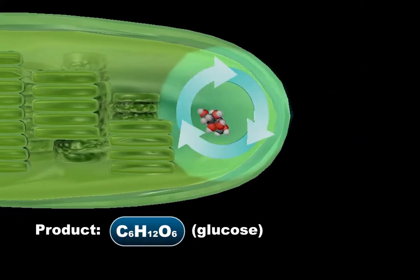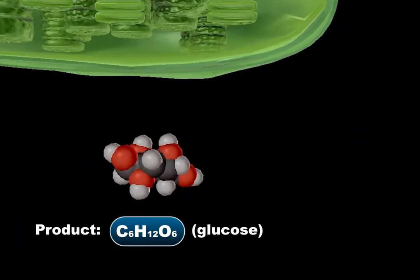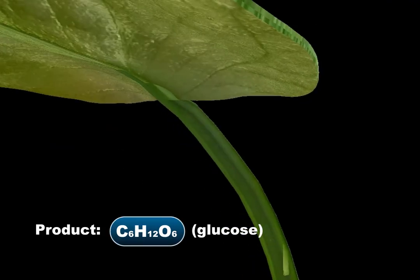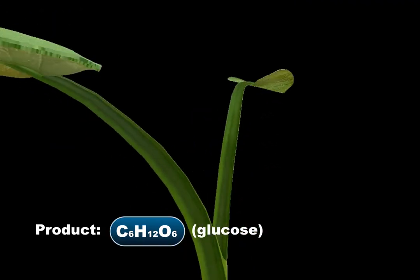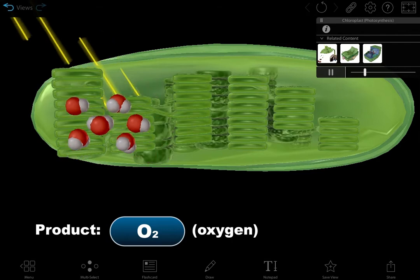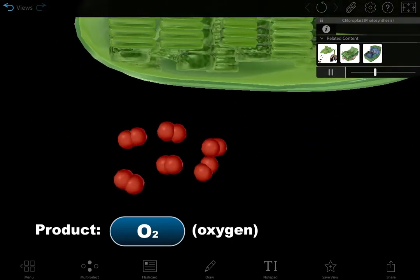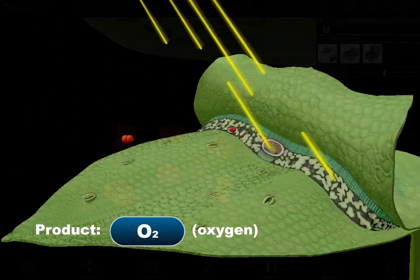The plant can store the sugars, including glucose, that are produced by photosynthesis or use them to fuel its activities. Oxygen is released as a byproduct of photosynthesis. It exits the leaves through the stomata.